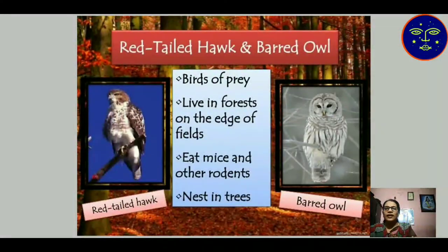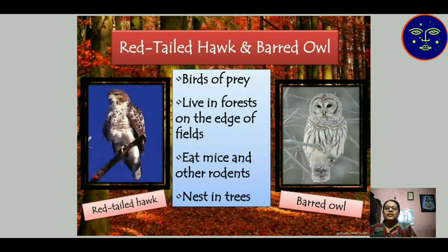Similarly, for the red-tailed hawk and owl, these birds are predators — meaning they eat other organisms. They live in forests and edges of fields, eat mice and other rodents, and nest in trees. These are the niche characteristics of these birds.